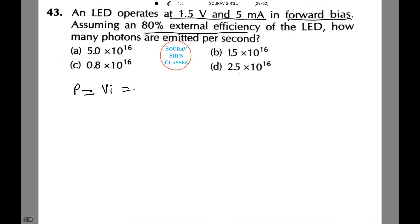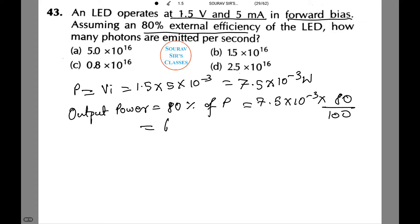Let's look at the output. V0 equals to minus 1.5 into 5 into 10 to power minus 3, which equals 7.5 into 10 to power minus 3 watt. Therefore output power equals to 80% of P, which equals to 7.5 into 10 to power minus 3 into 80 by 100, and this comes to 6 into 10 to power minus 3 watt.